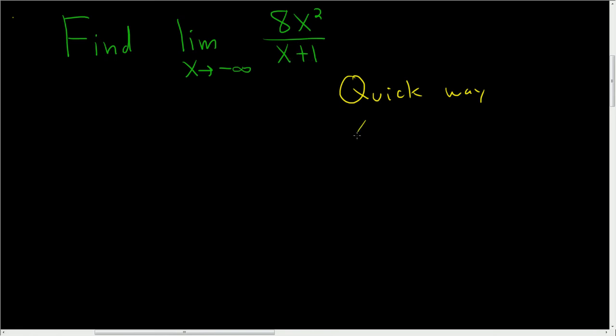So this is really approximately equal to 8x squared over x, which is equal to 8x. And x is approaching negative infinity. So 8x is approaching 8 negative infinity. This is terrible, but that's the right answer.